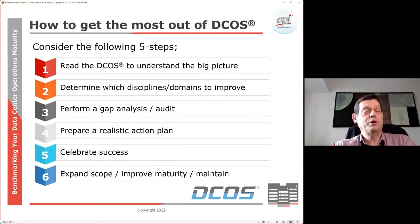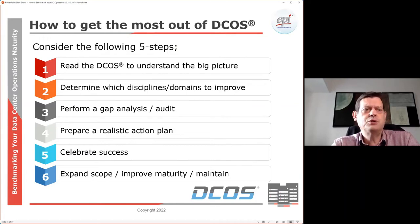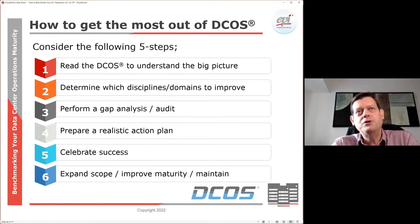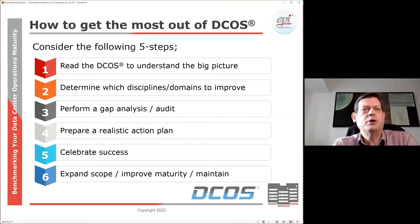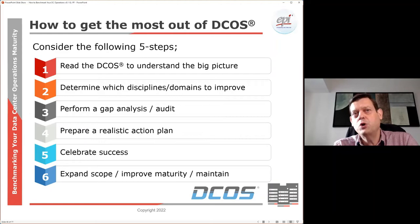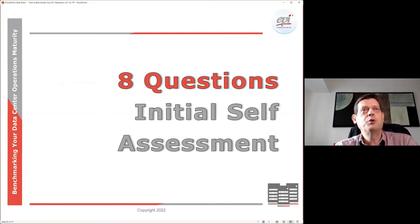The best approach is simple steps: read the DCOS first as a general walkthrough, then identify which domains are most relevant for improvement in your organization, check the gaps — either internally or using an external organization — make an action plan, celebrate success, and then over time maintain your relevance and compliance to DCOS, expanding the scope or improving maturity, or keeping it at the level you deem appropriate.